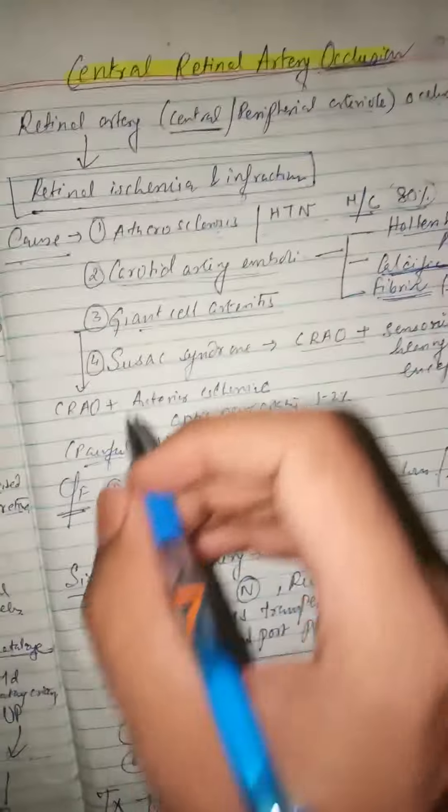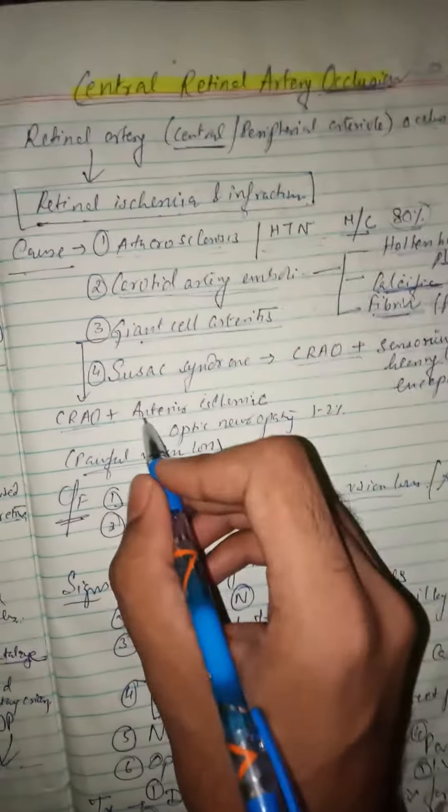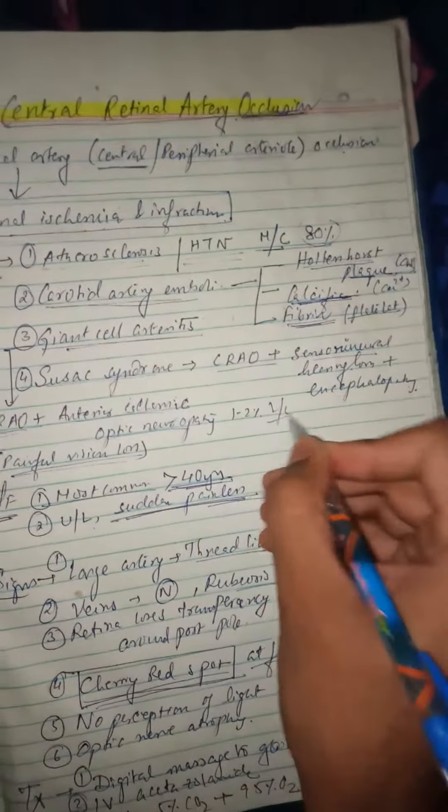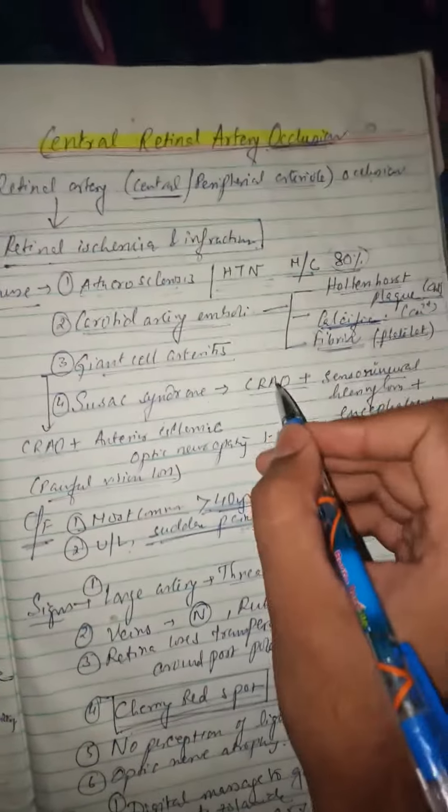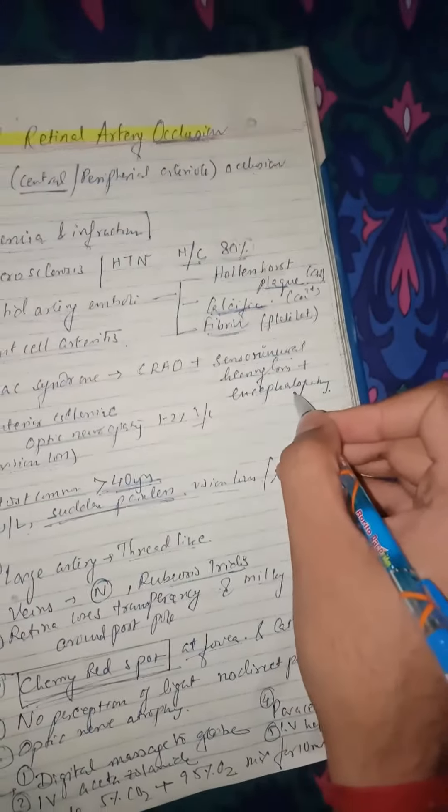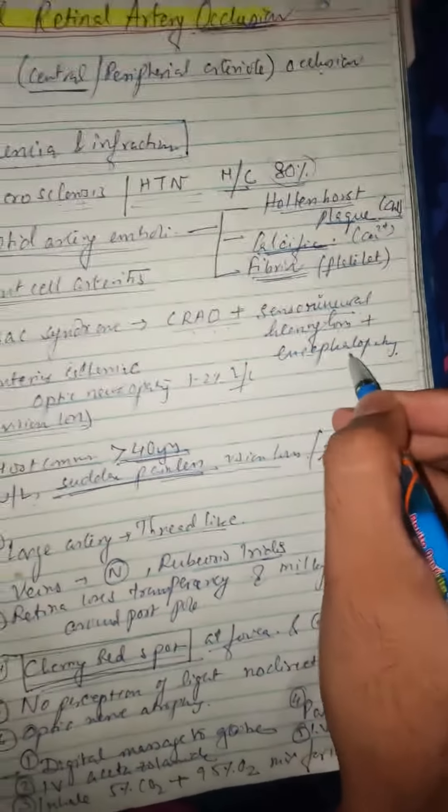Giant cell arteritis is the third most common cause. Giant cell arteritis leads to central retinal artery occlusion with anterior ischemic optic neuropathy. Susac syndrome is the least common cause, presenting as central retinal artery occlusion with sensorineural hearing loss and encephalopathy—a triad of these three features.